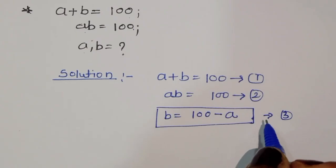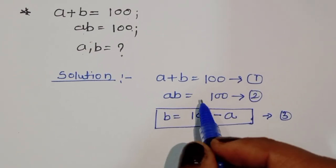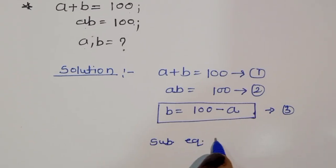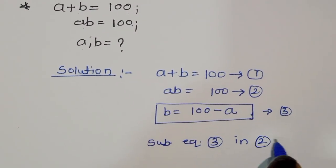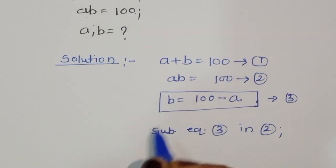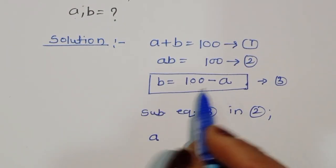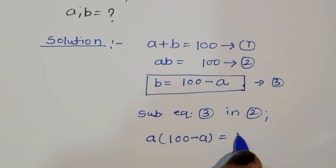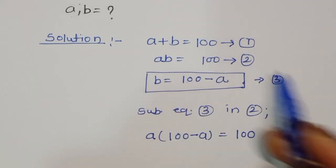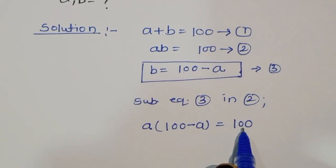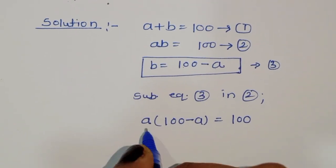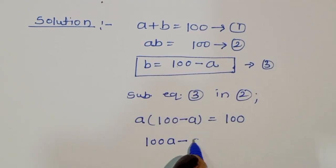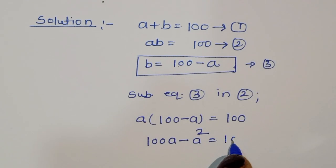Now we have to substitute equation 3 into equation 2. So substituting, we get a times (100 minus a) is equal to 100. Expanding: 100a minus a squared is equal to 100.